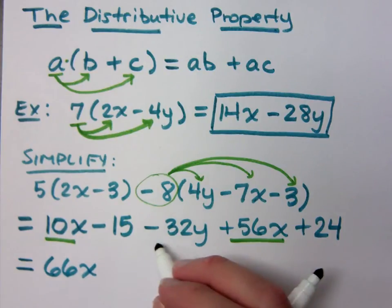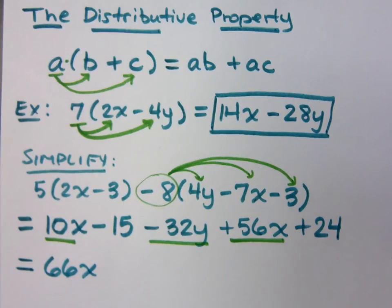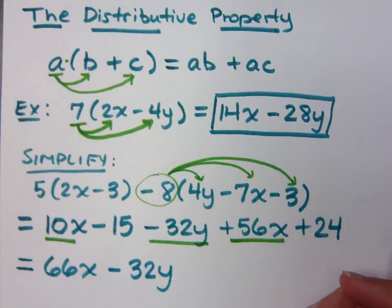Now, this is my only y term, so he goes next. Minus 32y. And then at the end, I've got my constant term. Always put the constant at the end because that's how mathematicians like things.